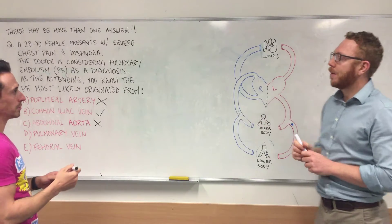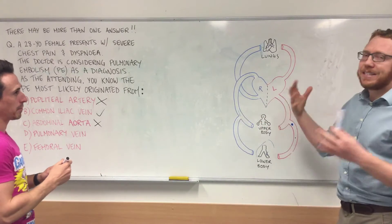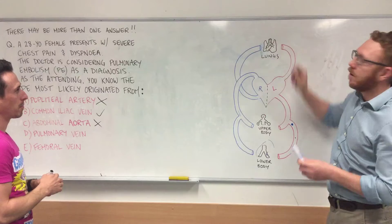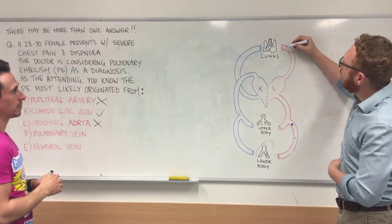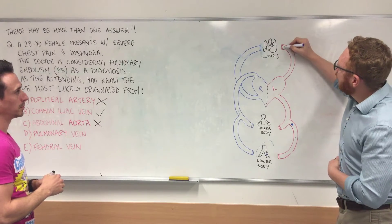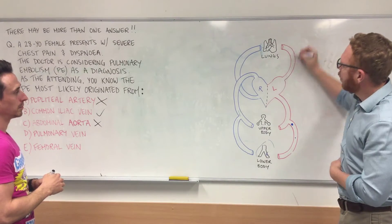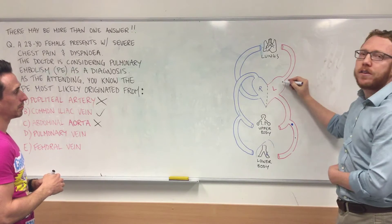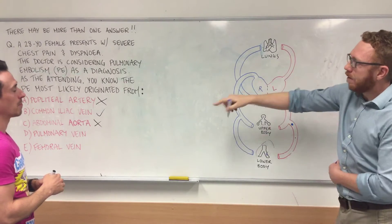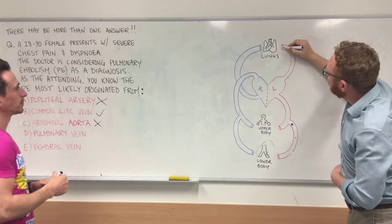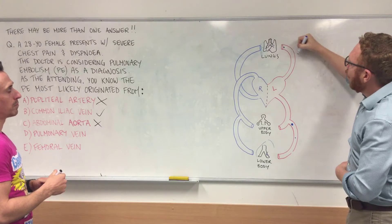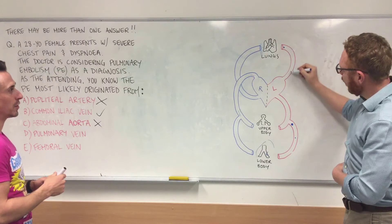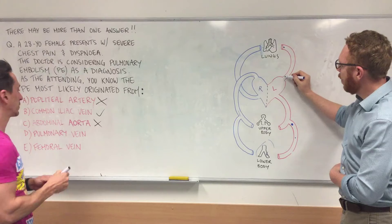Pulmonary veins — this is a tricky one because it sounds like it's in the lungs and it's a vein. But remember, a vein by definition brings blood to the heart. So the pulmonary vein flows away from the lungs towards the heart. A clot here would most likely end up causing a stroke or something similar. So it can't be that one.